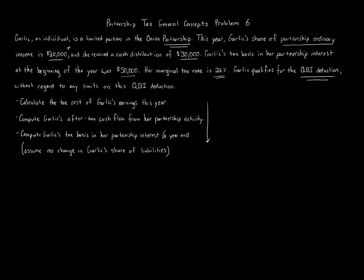That twenty-thousand-dollar amount is Garlic's allocated share, so that twenty thousand dollars of income is going to be subject to tax on Garlic's individual tax return — on Garlic's 1040. So we calculate the tax cost of Garlic's earnings this year. We start by taking the twenty thousand dollars, which is Garlic's share of the Onion Partnership ordinary income.